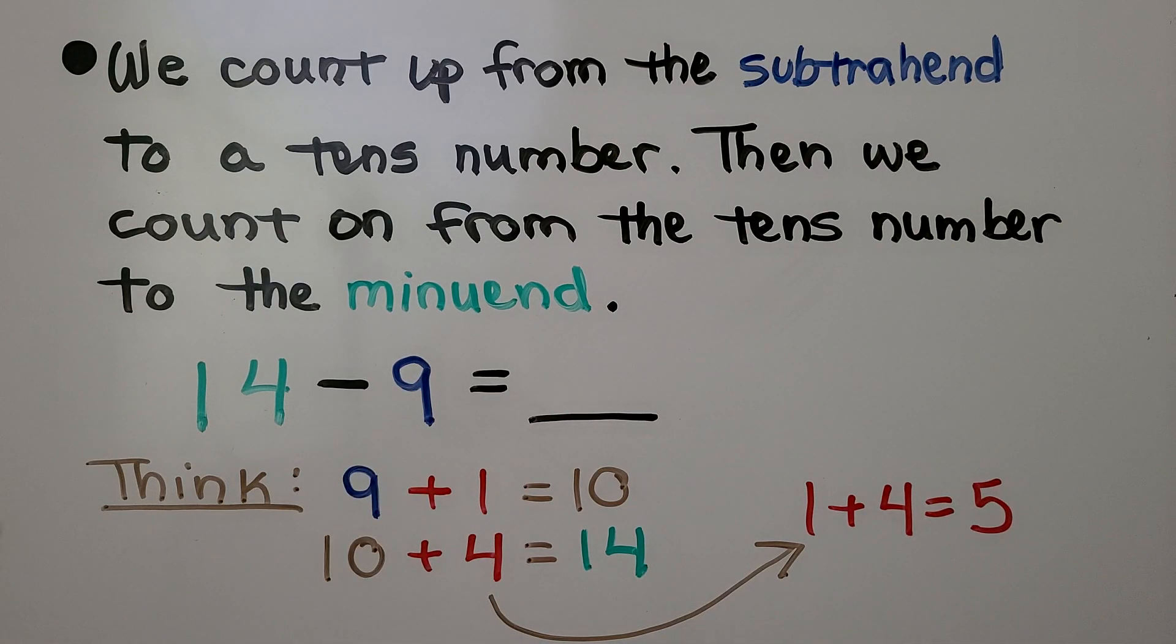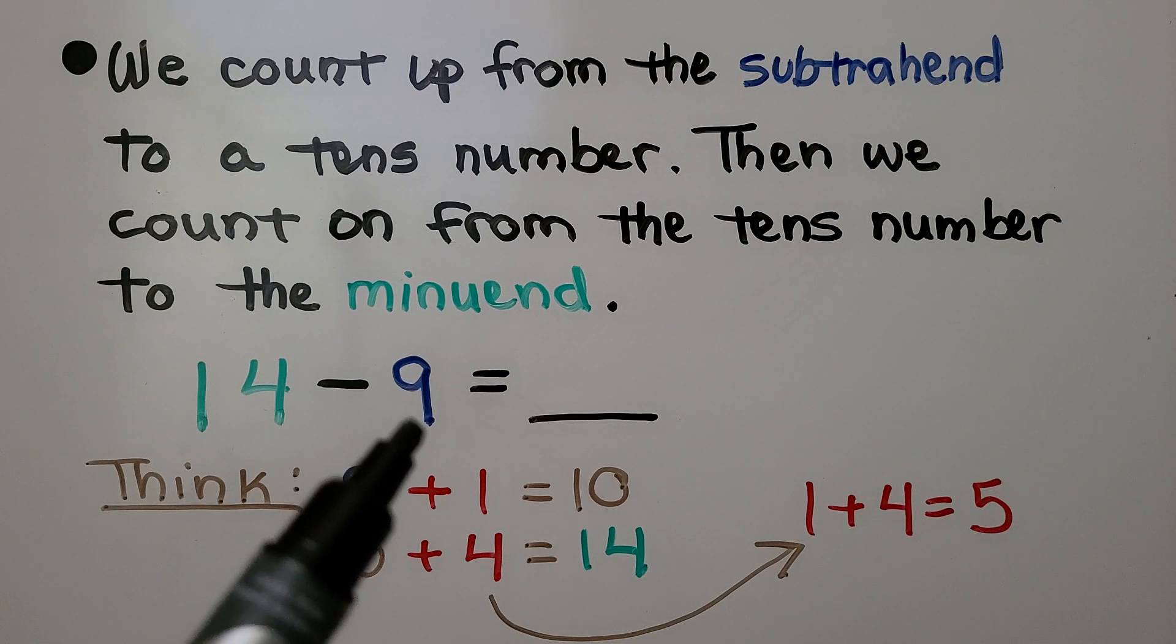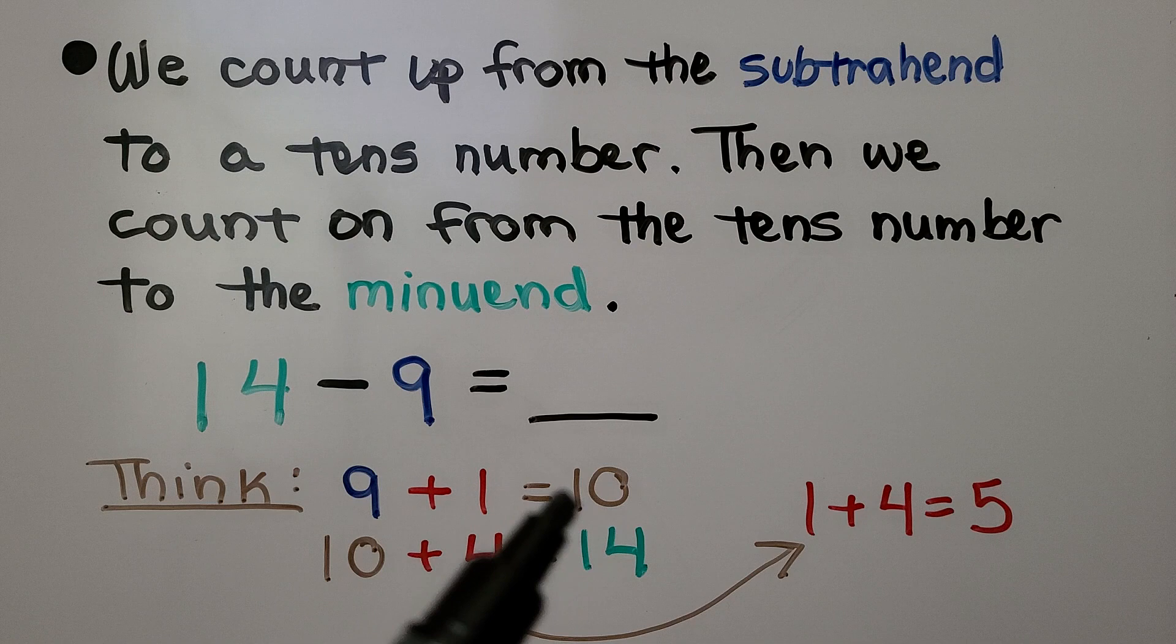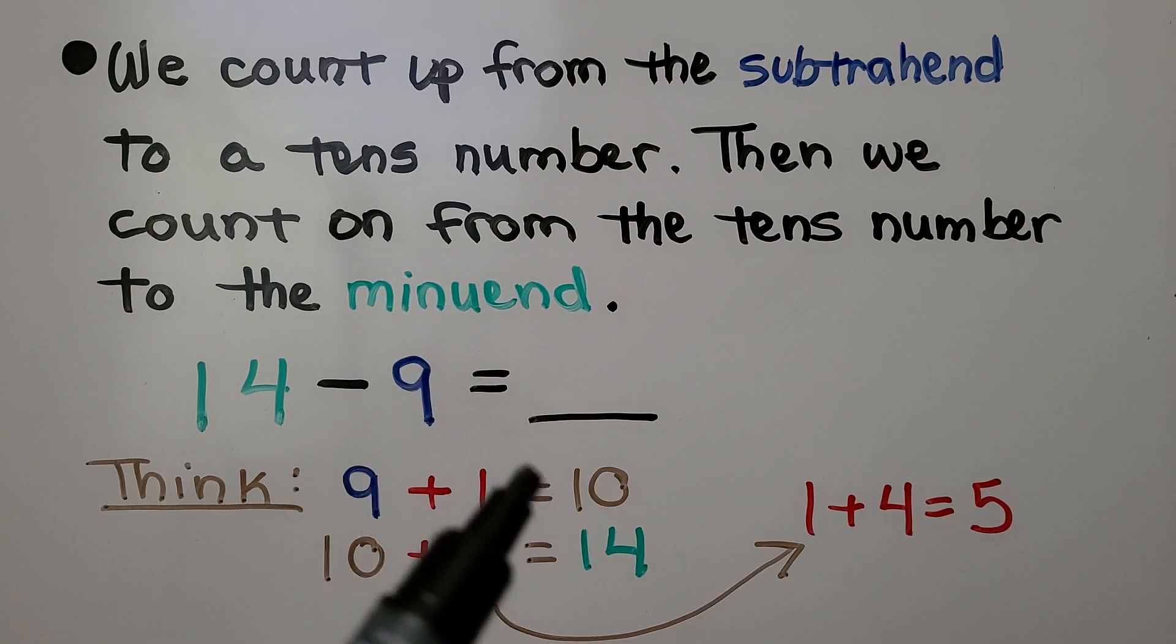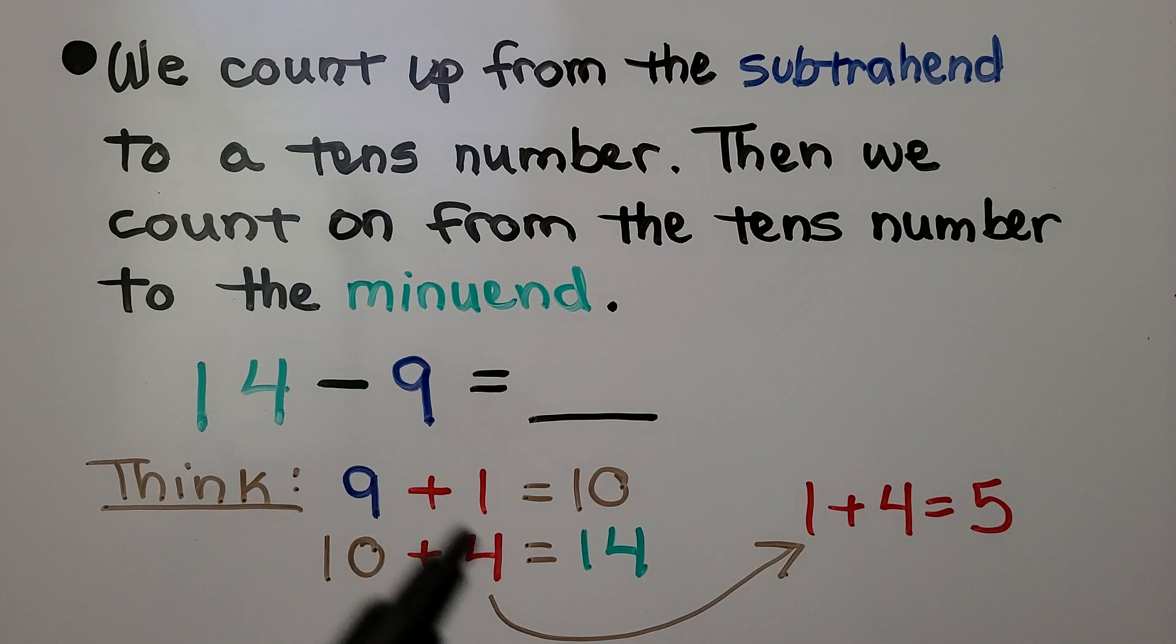So if we have 14 minus 9, we start at 9, the subtrahend, and we count up to the next tens number, which would be 10. So we're just adding a 1 to the 9. And we think 10 plus some number is equal to 14. Well, that would be 4.